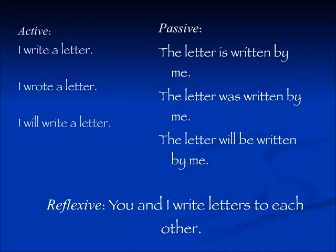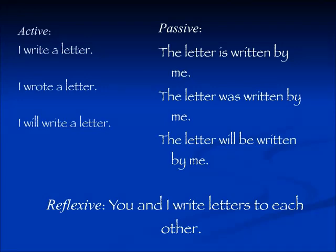The two forms that we're doing today are passive — these are the first passive forms that we're covering. In the active form, the subject of the sentence is doing the action: I write a letter, I wrote a letter, I will write a letter. Active and passive have nothing to do with the tense of the verb. In the passive form, the subject receives the action: the letter is written by me, the letter was written by me, the letter will be written by me.